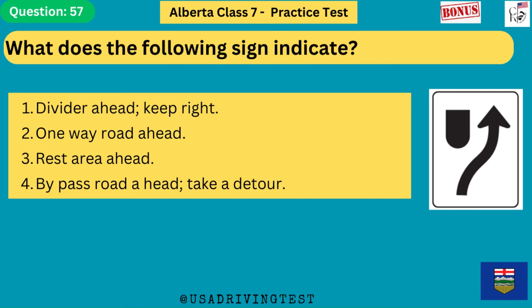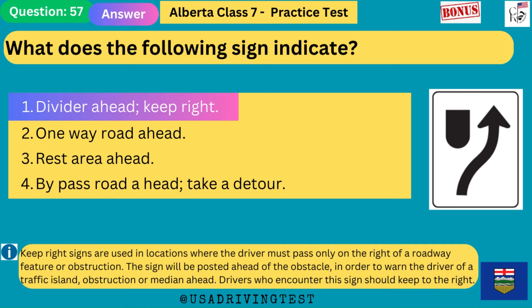What does the following sign indicate? 1. Divider ahead, keep right. 2. One-way road ahead. 3. Rest area ahead. 4. Bypass road ahead, take a detour. The answer is 1: divider ahead, keep right. Keep right signs are used in locations where the driver must pass only on the right of a roadway feature or obstruction. The sign is posted ahead of the obstacle to warn the driver of a traffic island, obstruction or median ahead. Drivers who encounter this sign should keep to the right.